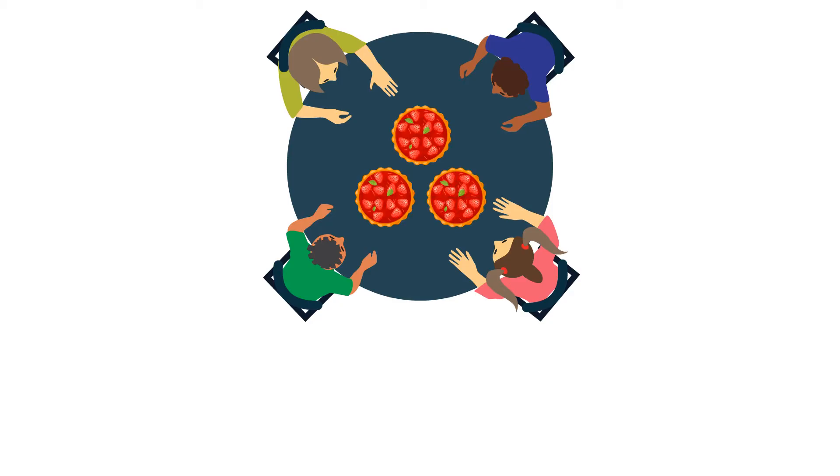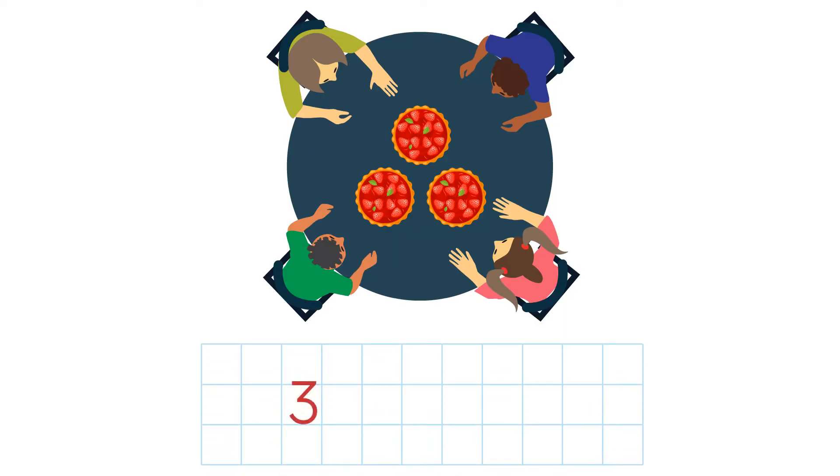Let's do another example. Four students share three pies equally. What part of the pie does each student get? We need to divide three pies amongst four people.